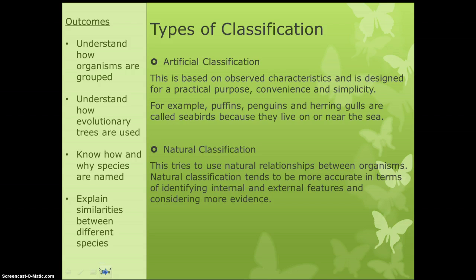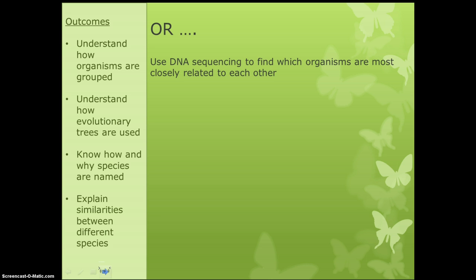Classification can be done in two different ways. Artificial classification is based on observed characteristics and is designed to be simple — we might group things based on where they live, so puffins, penguins, and gulls are seabirds because they live near the sea. It's completely artificial and done for our own convenience. Natural classification tries to use relationships — for example, looking for shared features like webbed feet to identify closely related animals. Nowadays we use DNA sequencing to find which organisms are most closely related to each other.